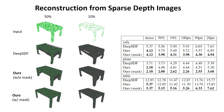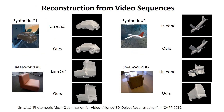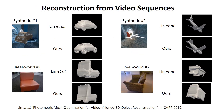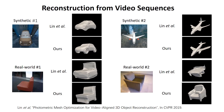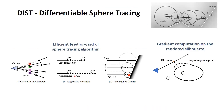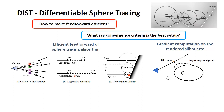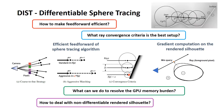Our method can effectively reconstruct accurate 3D shapes from sparse depth images, as well as video sequences. Our differentiable renderer is inspired by sphere tracing. To make it feasible in the deep learning framework, we tackle several problems.